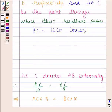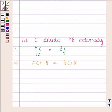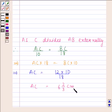Now BC is equal to 12 centimeters. So AC is equal to 12 into 10 divided by 18, and AC is equal to 6 and 2 by 3 centimeters.